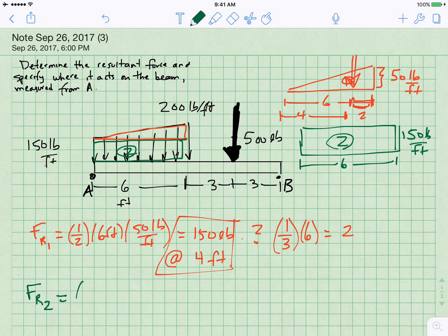Area two is a rectangle. So we have the base, which is six feet. We have the height of it, which is 150 pounds per foot. So pounds per foot times feet is pounds. So we will get 900 pounds.